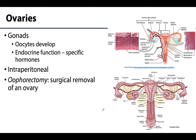Very closely related to the infundibulum and the lateral pelvic walls are the ovaries, which are gonads that develop oocytes and also have an endocrine function, specifically secreting estrogen and progesterone. The ovaries are composed of the cortex, medulla, and interstitial cells. The cortex contains the ovarian follicles at various stages of development.